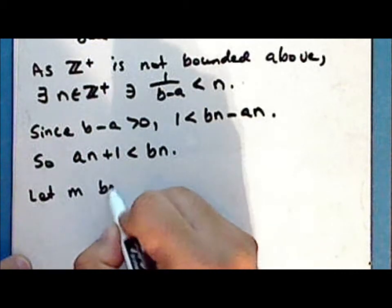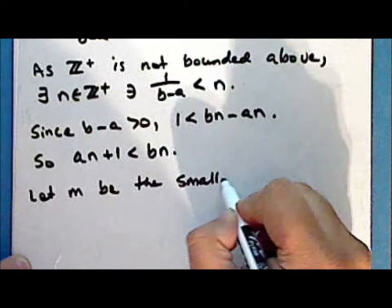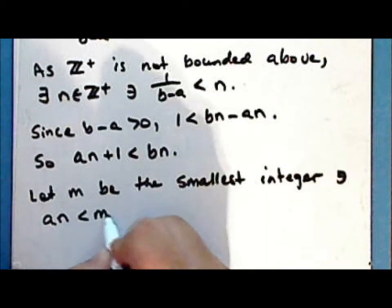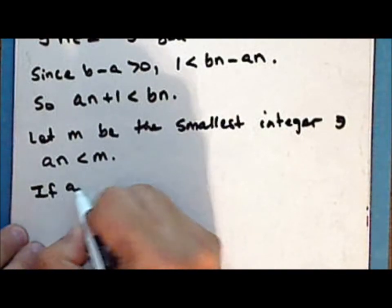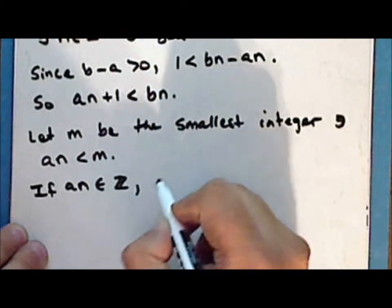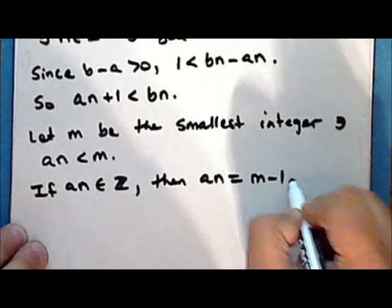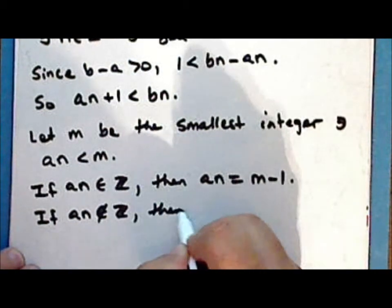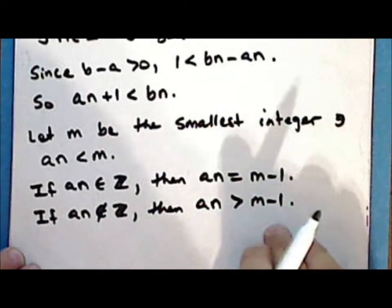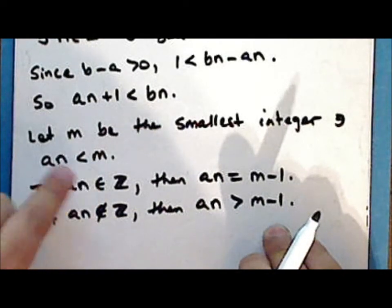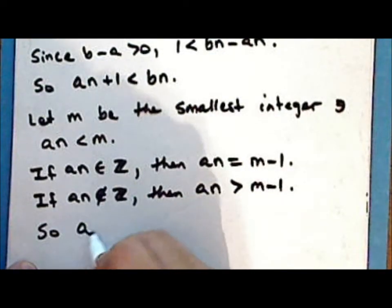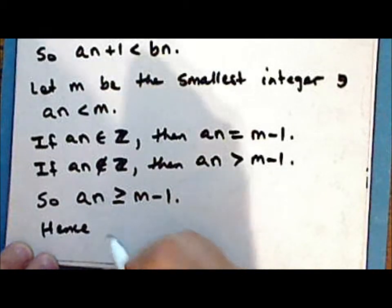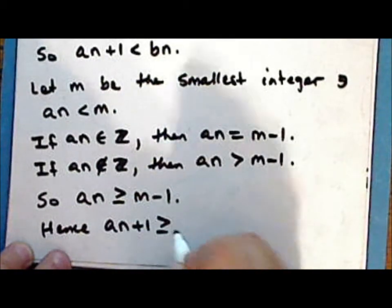Now let M be the smallest integer such that A times N is less than M. If A times N is itself an integer, then A times N is the integer M minus 1. And if A times N is not an integer, then A times N is greater than M minus 1, otherwise M is not the smallest such integer. So A times N is greater than or equal to M minus 1, and hence A times N plus 1 is greater than or equal to M.